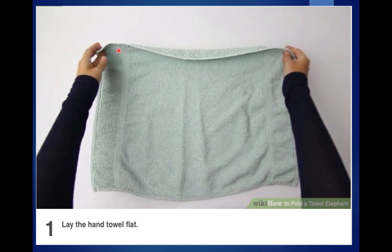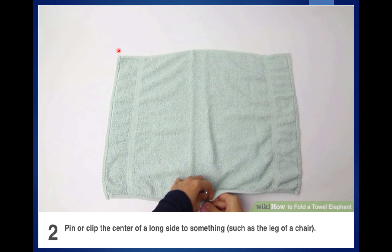Our first step is to lay — oh sorry, just quickly, you need to actually do this on the ground. This one we need to do on the ground near a stool preferably, because you will need to use a stool of some sort. So lay the towel flat near a stool and then you're going to pin or clip the centre of the long side to something such as a leg of a chair. That's why you need to use the stool. Or you can get your partner, if you're working in pairs, to just hold this bit — probably the easiest thing to do, to be honest.